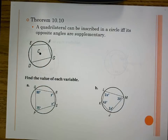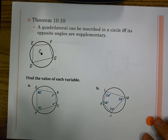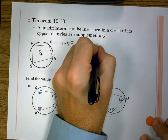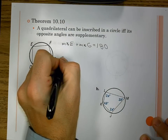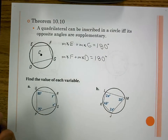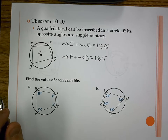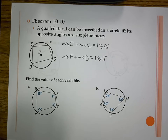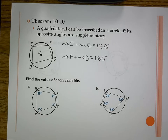Next, the inscribed quadrilateral. This is different from the triangle. Theorem 10.10 says a quadrilateral can be inscribed if and only if its opposite angles are supplementary. So opposite angles E and G add to 180, and opposite angles F and D also add to 180. Don't apply parallelogram rules here — this has its own set of rules. All we know is it has four sides and is inscribed in a circle, so opposite angles are supplementary.